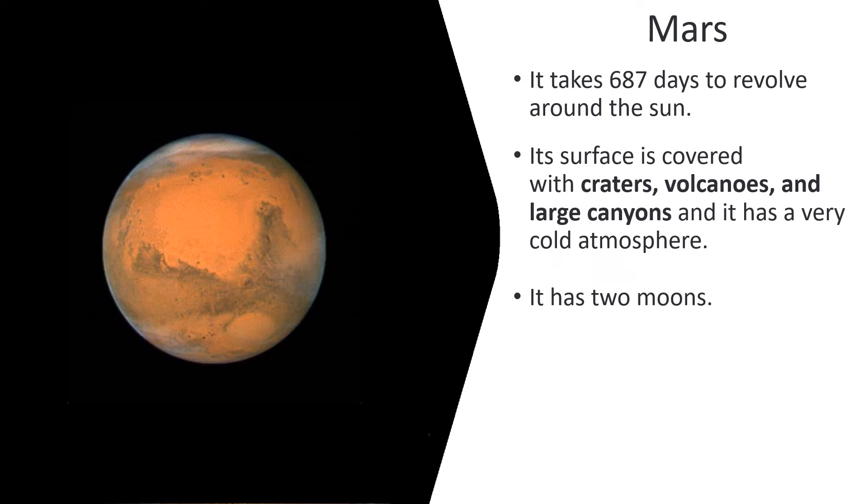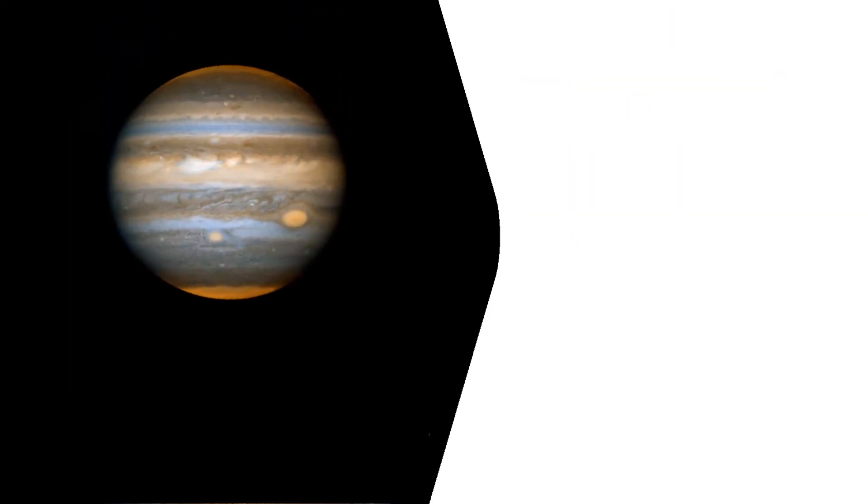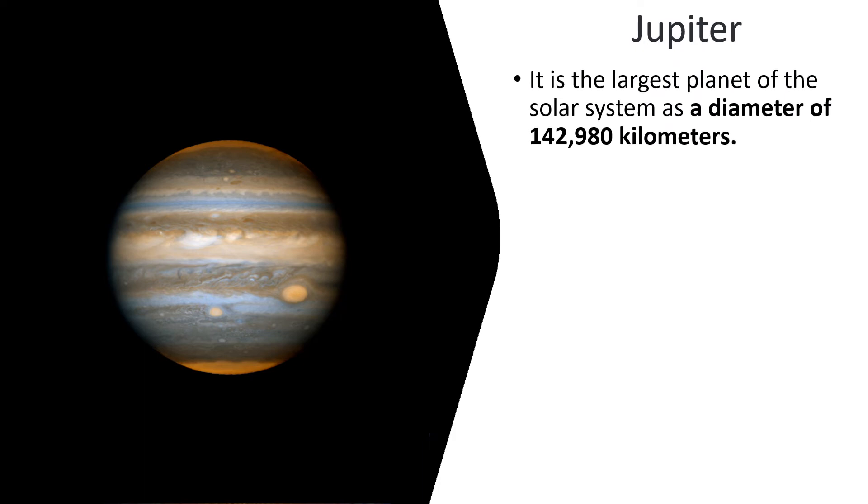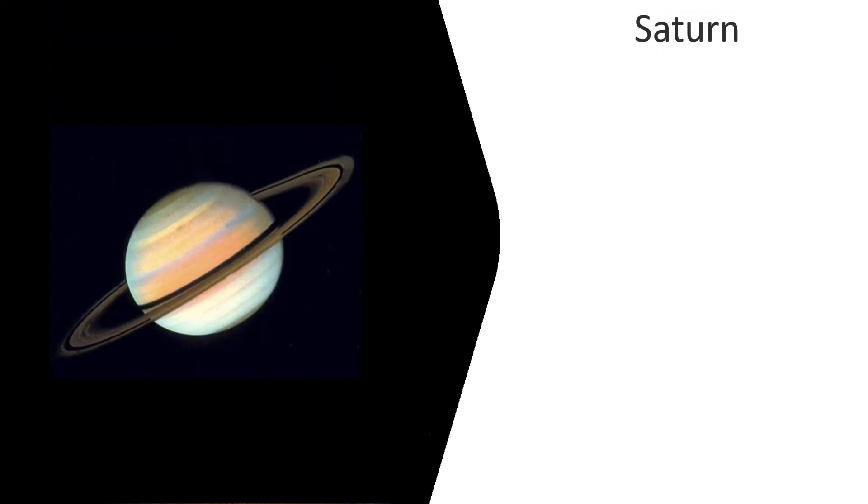Jupiter. It has two moons. It is the largest planet of the solar system with a diameter of 142,980 kilometers. Jupiter orbits the Sun every 12 years.